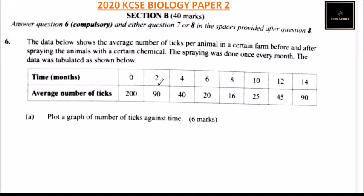Question number six is in Section B, worth 40 marks. You are supposed to answer question six, which is compulsory, and either question seven or eight, in the spaces provided after question eight. Because this is revision, we are going to cover all three questions, starting with question number six.